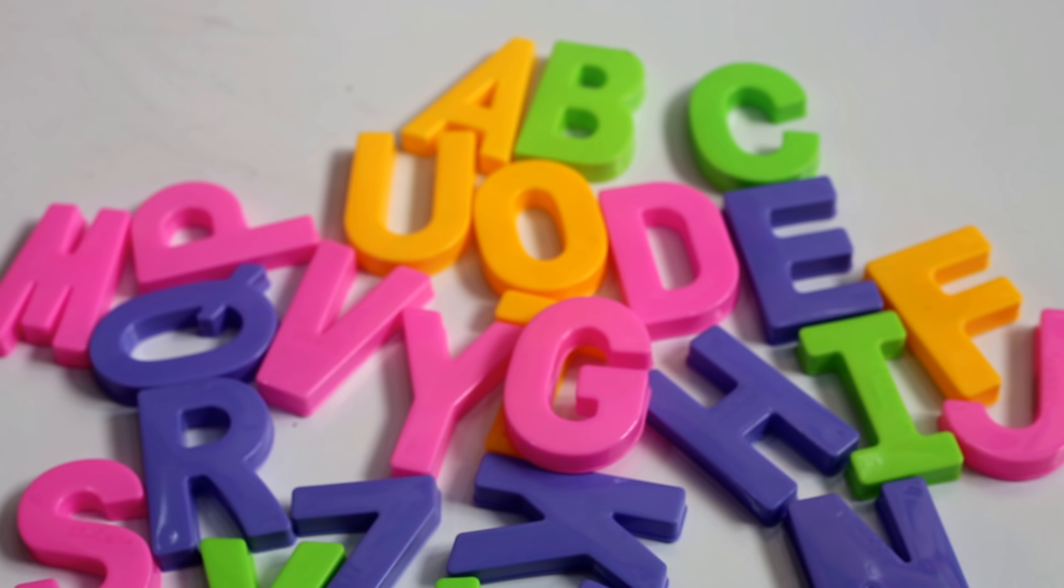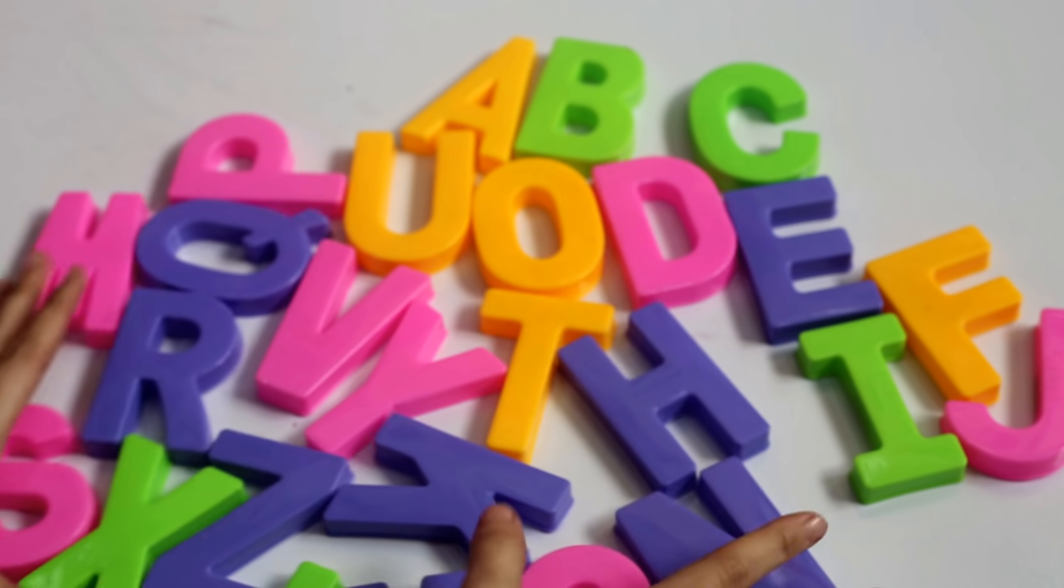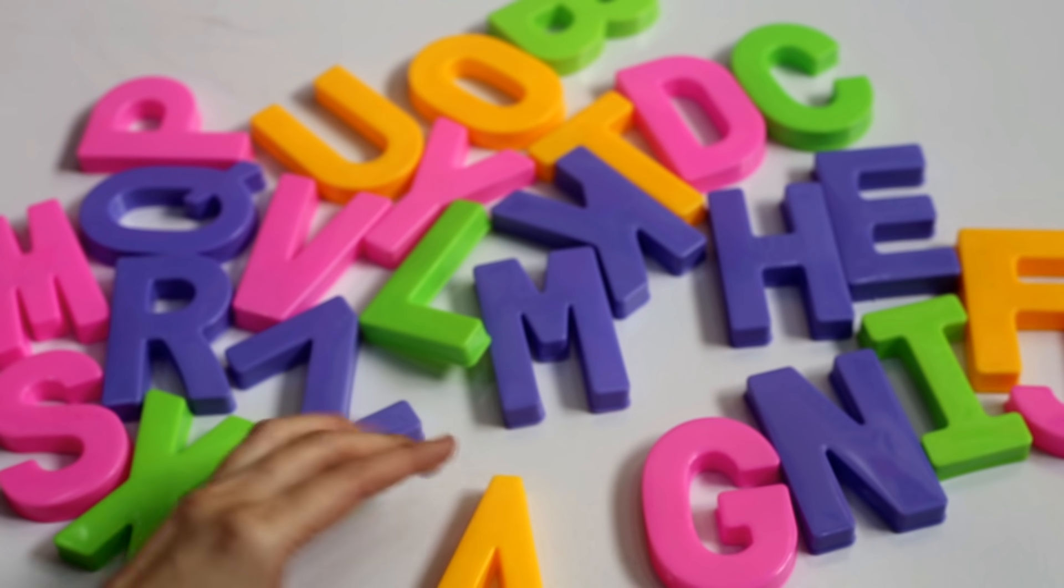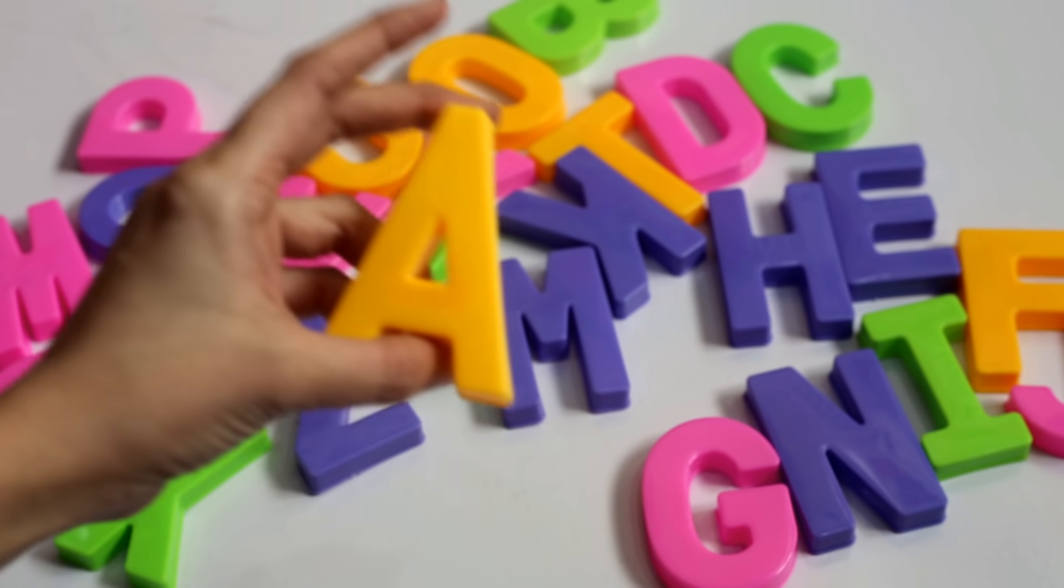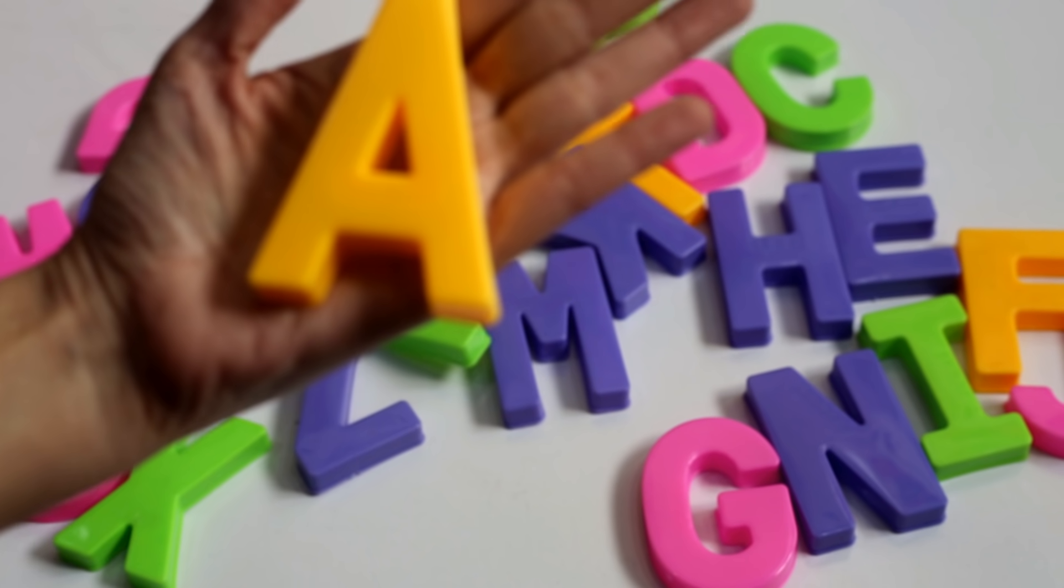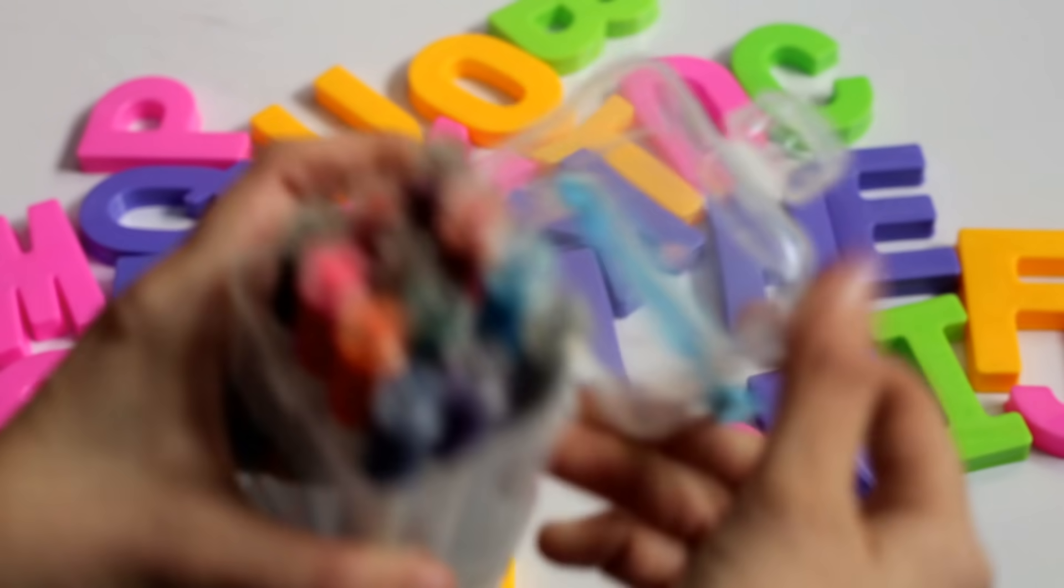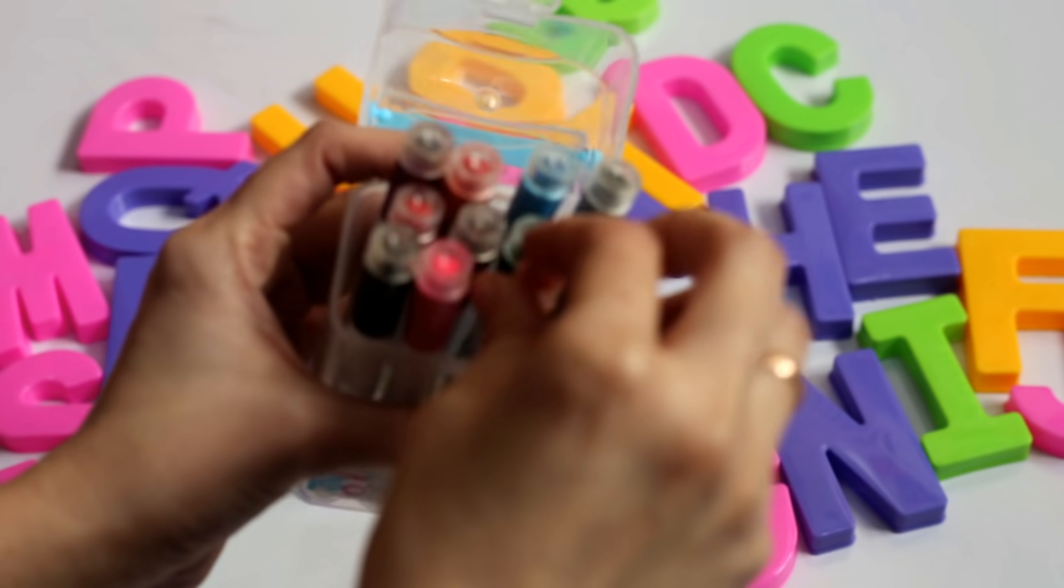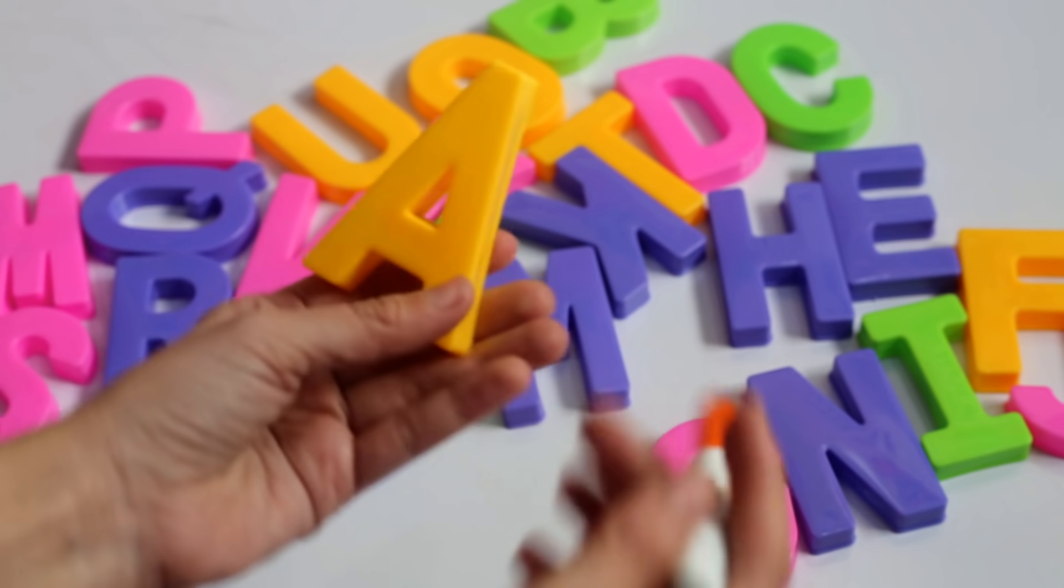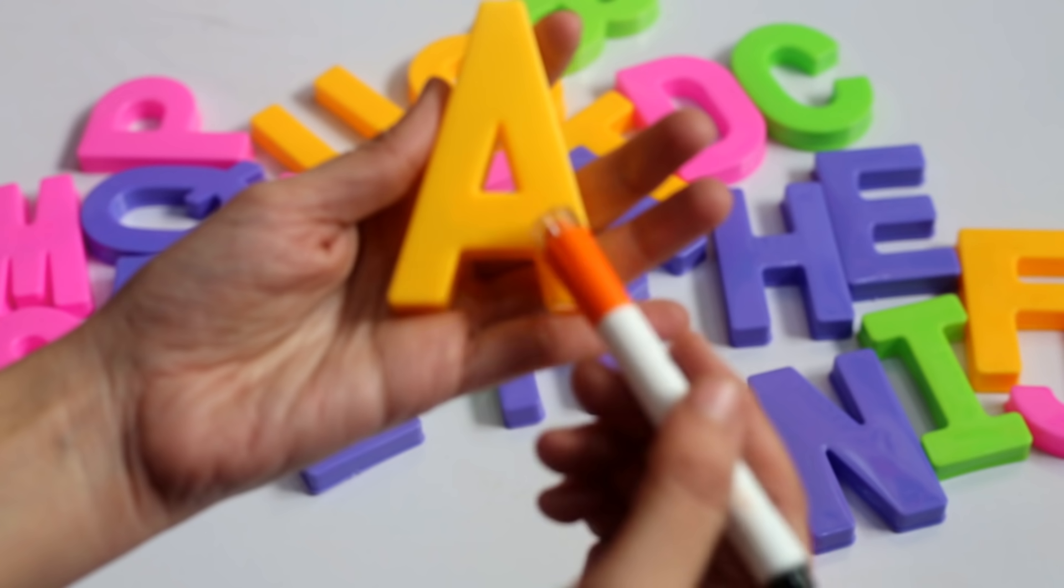A. Where is A? A. This is A. A shaped like this. A. This is A.